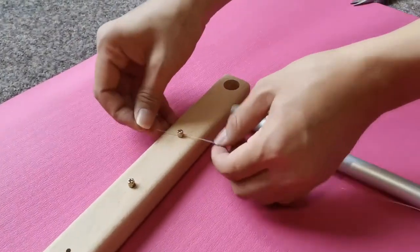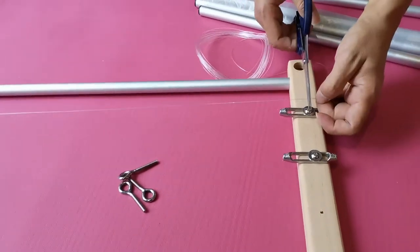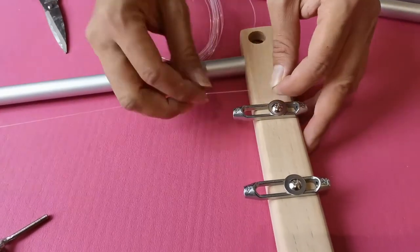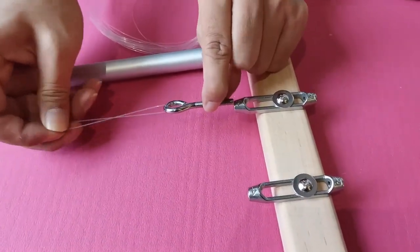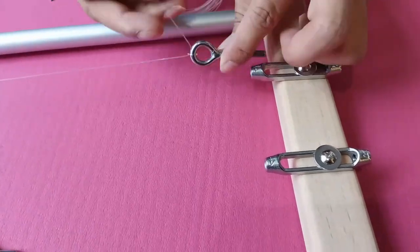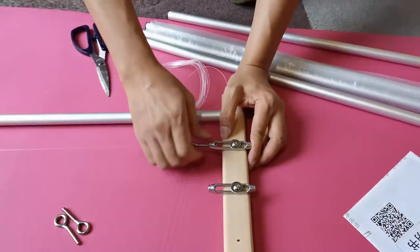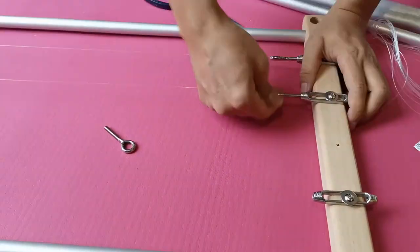Secondly, tie the transparent fishing lines. This threaded bolt is used as a tensioner which can pull the fishing line extremely tightly. There are totally three fishing lines to be installed.